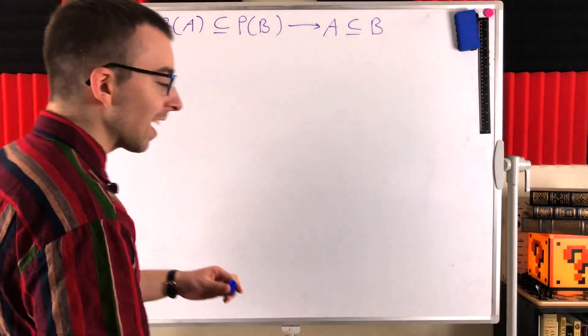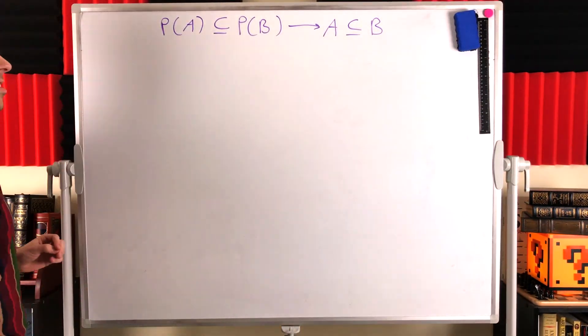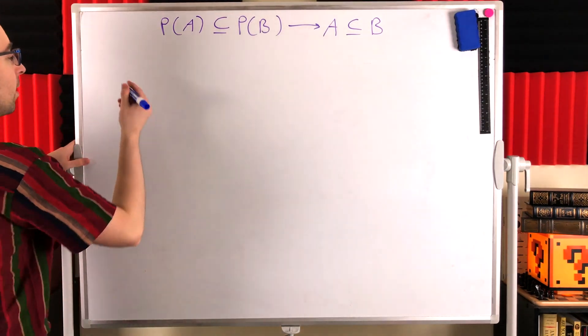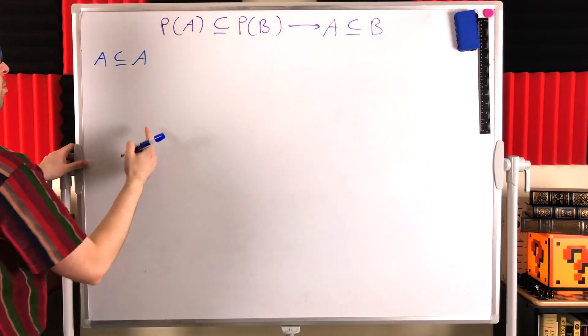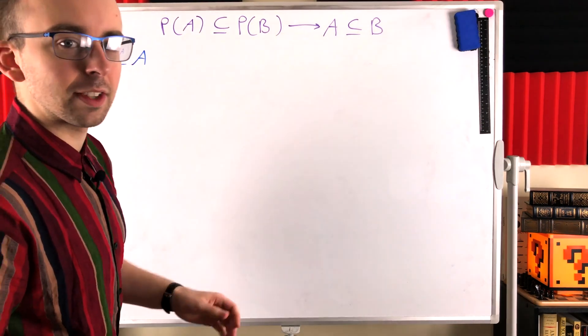So now let's get into the quick proof. What do we know is a subset of A? We know that A is a subset of A. By definition of subset, every set is a subset of itself.